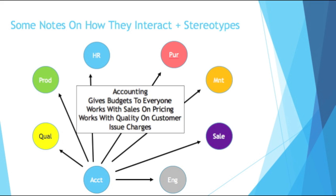Accounting gives budgets to everyone. It may be your purchasing department that tells you what your budget is, but that typically comes from the senior level of accounting. They will work with sales on determining pricing, and they'll work with quality on customer issue charges. If you send a bad part and get a customer complaint, you get charged for that, or you have to pay to get the bad part shipped back. I remember at the plant I worked in, we'd often have to go to accounting and discuss those charges.